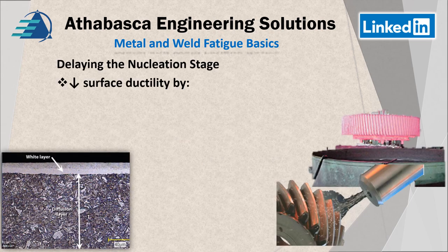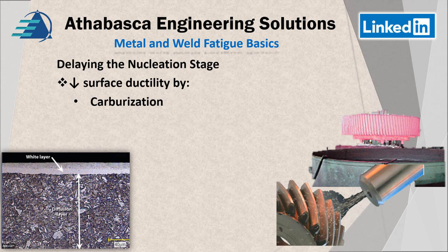Let's talk more about delayed nucleation. We can reduce the surface ductility by a process called carburization, which is the introduction of carbon to the surface. You can use an industrial gas process, or in the lab I remember we used pack carburization, which increased the carbon content of the steel. The higher the carbon content that gets absorbed, the harder the material gets in the first few thousandths of an inch, and that's enough to delay the onset of nucleation cracking to an extent. Nitriding is another strategy — I've seen that done at industrial sites and it has proven to be very effective in delaying cracking.